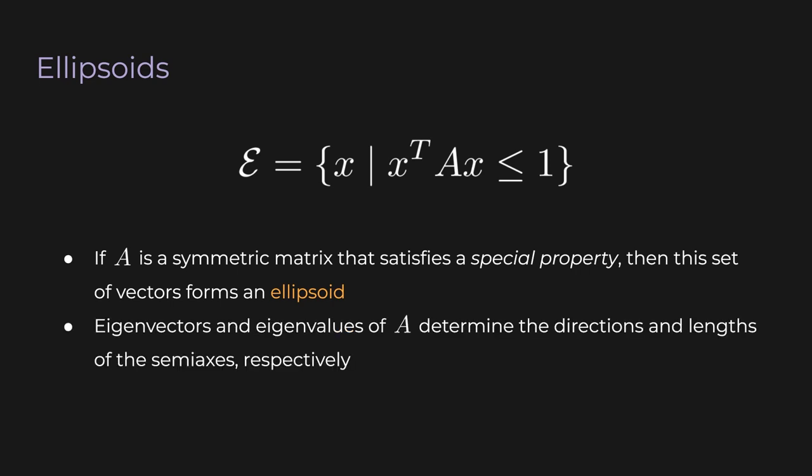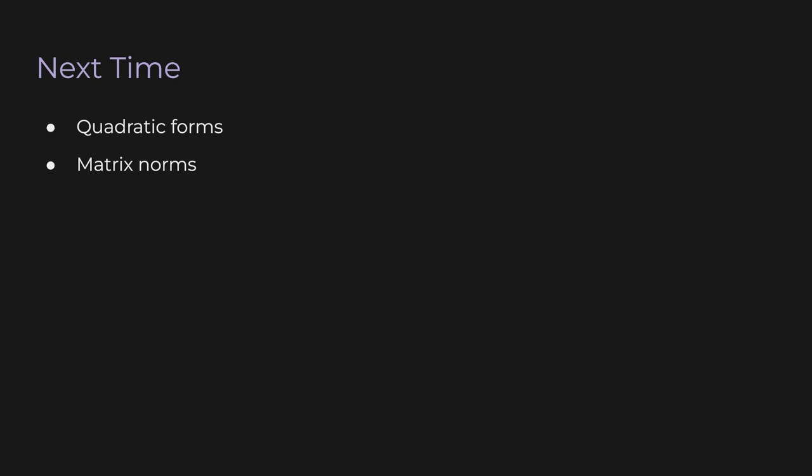Now here's where eigenvectors come in. The eigenvectors and eigenvalues of the matrix A determine the directions and lengths of the semi-axes of the ellipsoid. If we want to make our landing ellipse small, our spacecraft's control system needs to make the eigenvalues of the matrix small in magnitude. We typically don't have direct control over the values in this matrix. The control system has to adjust the propulsion system or the aerodynamics of the spacecraft to indirectly reduce the magnitude of the eigenvalues. But in the abstract sense, that's what it all boils down to. As for the special property that the matrix A must satisfy for this set to form a bounded ellipsoid, we'll see in the next lecture what exactly this property is. Alright, it's pretty clear now that eigenvectors are super useful across a wide variety of domains. We've got one more lecture to cover before we finally introduce the SVD. Next time we'll cover two important concepts, quadratic forms and matrix norms.